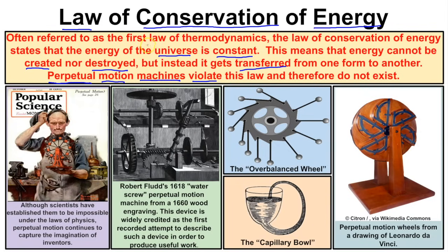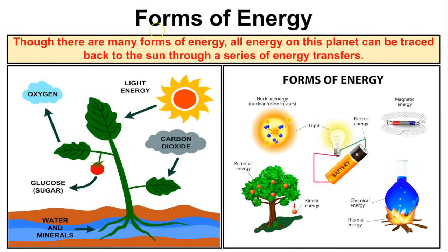Though there are many forms of energy, all energy on this planet can be traced back to the sun through a series of different energy transfers. For example, a plant through photosynthesis absorbs sunlight along with carbon dioxide and water, and converts that light energy into plant matter — so light energy from the sun is being transferred into different forms of energy within the plant cells.